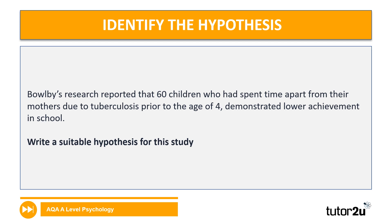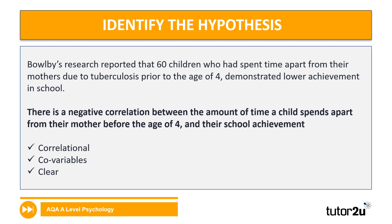On to Bowlby. His research reported that 60 children who had spent time apart from their mothers due to tuberculosis prior to the age of four demonstrated lower achievement in school. Your job is to decide what kind of hypothesis to write for this study and then write it — there's space in your booklet next to question 12. Pause the video. The answer: this should be a correlational hypothesis — specifically a negative correlation. For example: 'There is a negative correlation between the amount of time a child spends apart from their mother before the age of four and their school achievement.'